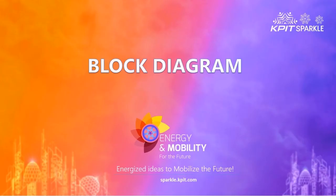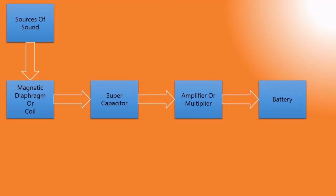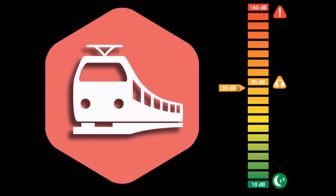Now moving towards the block diagram which shows the exact operation of the prototype. The first block shows the sources of sound which are transmitted from various sources such as train horns, heavy traffic, speakers, etc.